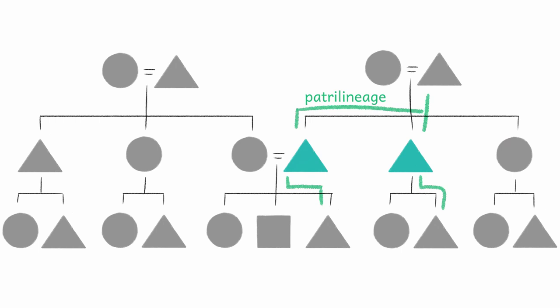In the Omaha system, relations who share the patrilineage are distinguished by generation and gender. Similar to the Iroquois system, men of the parental generation who share a patrilineage are given the same term. So your father's brother is also your father, and since he's your father, his children are your siblings.